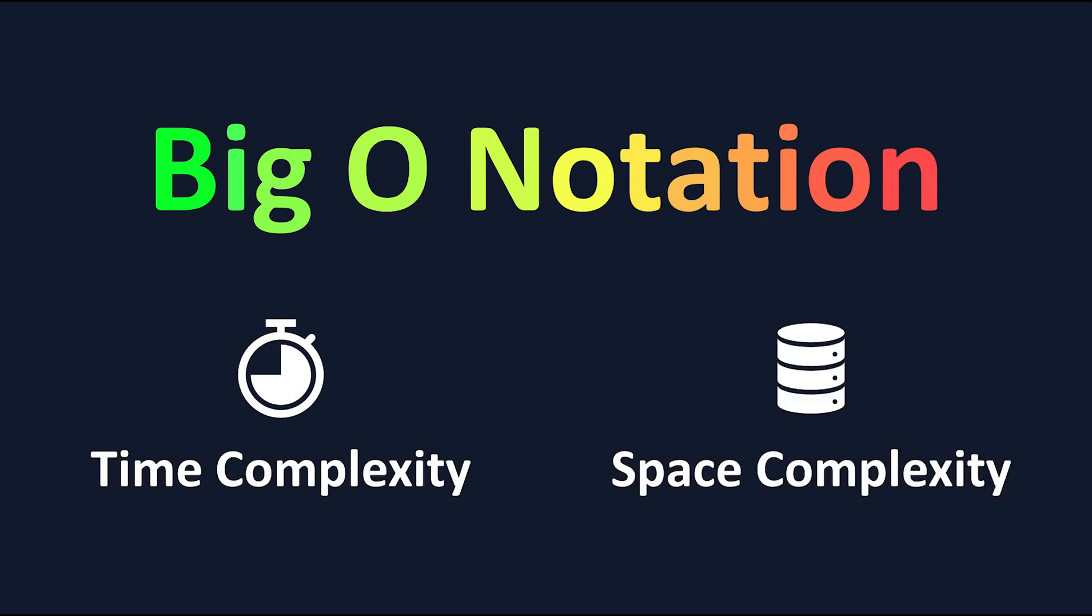Big O notation is a simple way of describing how fast an algorithm runs, called time complexity, and how much memory the algorithm uses, called space complexity.